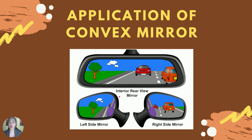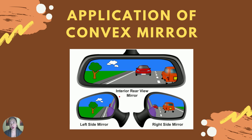Now let's look at spherical mirrors, which have curved surfaces. There are two types: convex and concave. For a convex mirror, the curve is outward. One application is the rear-view mirror and side mirror of automobiles — a convex mirror that forms an image that is smaller, upright, and virtual, regardless of the position of the object. This allows the driver to see what is coming behind them.